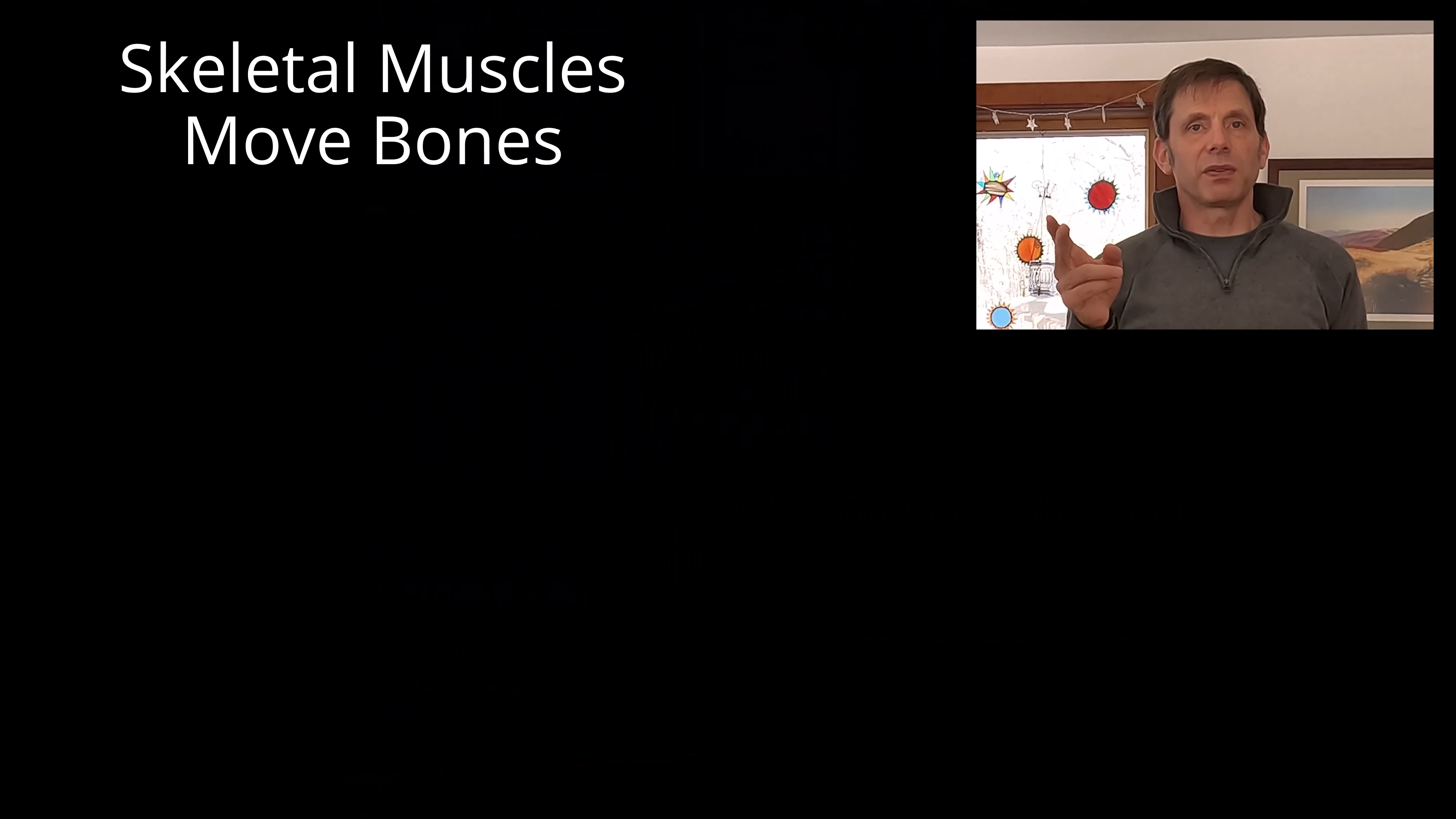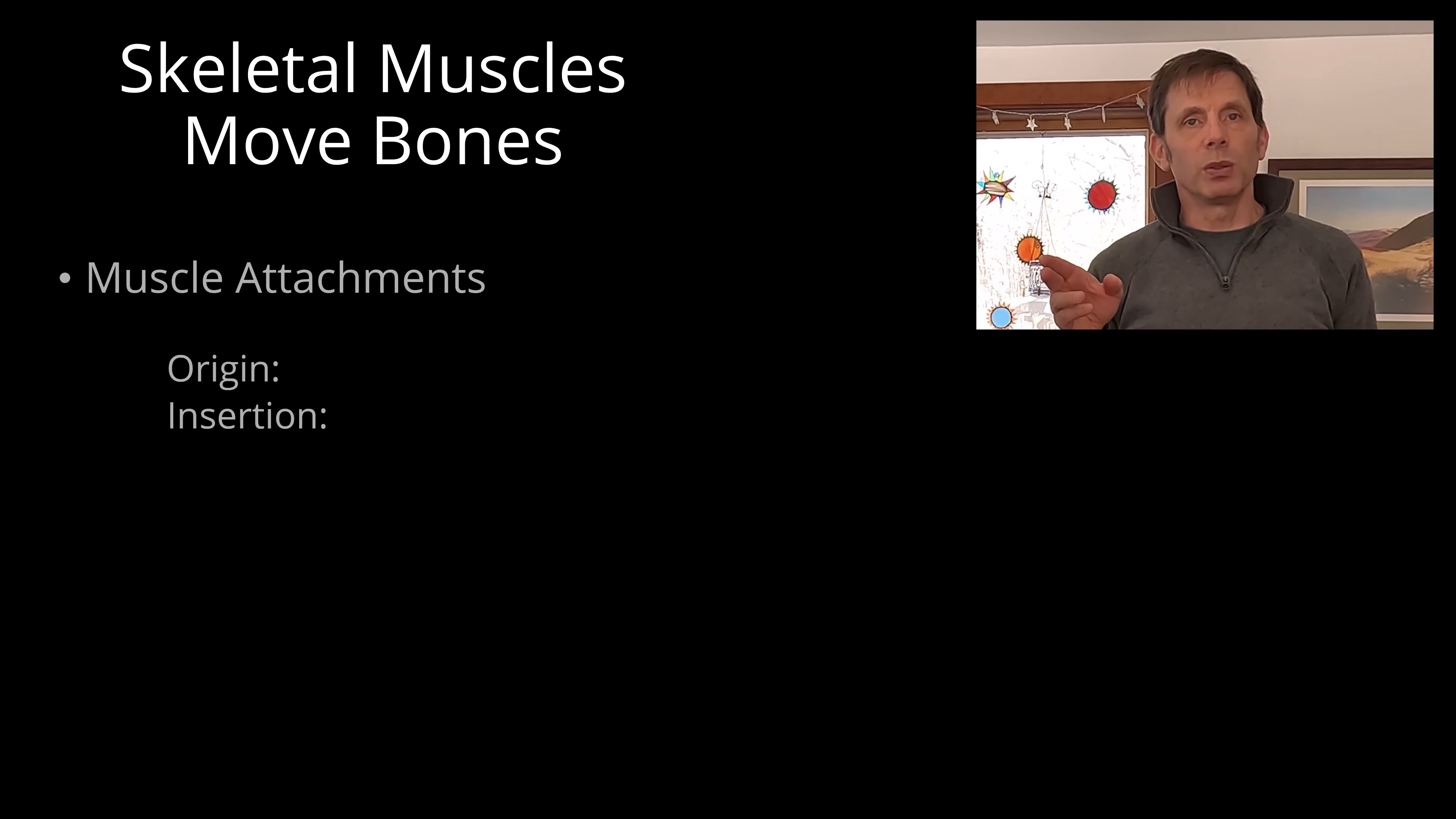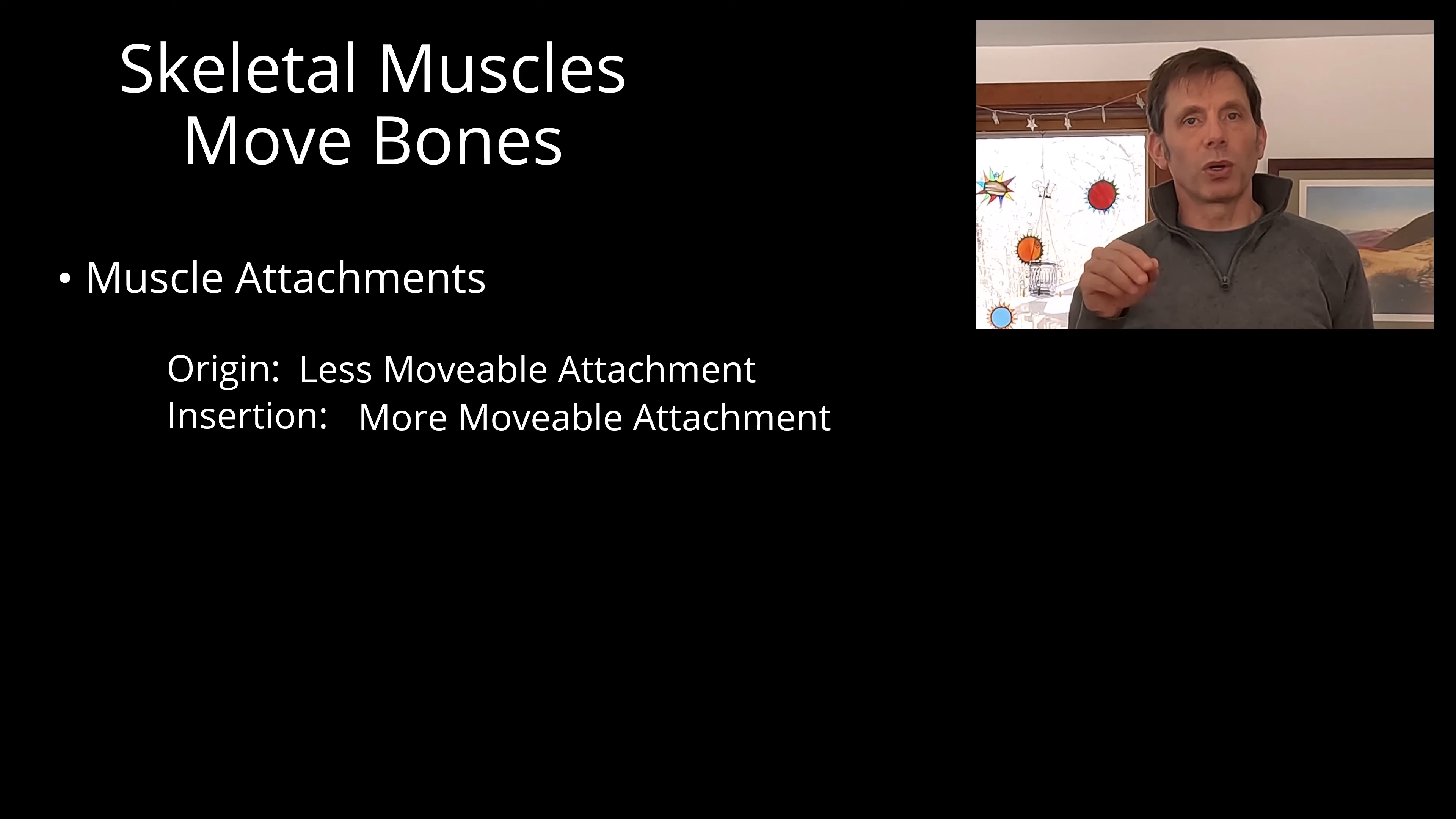You can look at the sagittal suture or coronal suture. A joint like my shoulder can allow lots of movement. It allows flexion, extension, lateral and medial movement, and also rotation in both directions.